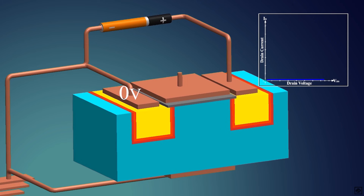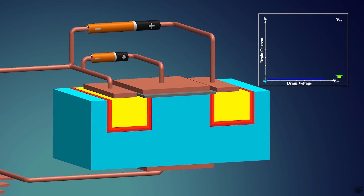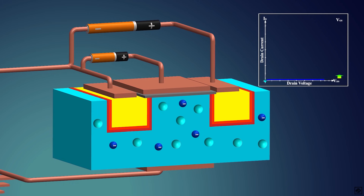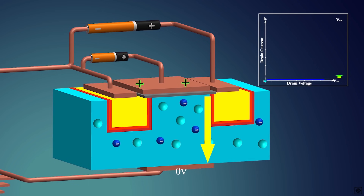Now, to flow current from drain to source, we have to create a channel between them. To create the channel, we connect a small voltage source between the gate and substrate with the positive terminal to the gate. This voltage is called VGS as it's between the gate and the source. The substrate is a P-type semiconductor, hence the charge carriers are holes, but there exist some free electrons as minority charge carriers. The battery creates an electric field inside the substrate. Due to this field, the electrons in the substrate flow opposite to the electric field, that is, towards the gate.